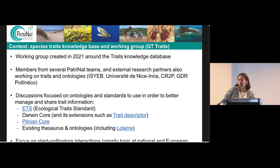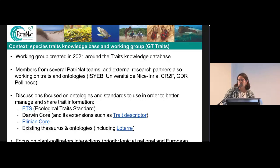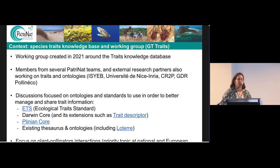Discussions were focused on ontologies and standards in order to better manage and share trait information. We looked at all existing standards and ontologies to see what was available and what was best fit for our needs. We looked at the ETS (Ecological Trait Standard), Darwin Core, because it had extensions such as trait descriptor, Plinian Core, and other existing thesauri and ontologies, including Lothaire, which is a French thesaurus focused on biodiversity terms. We decided to focus on plant-pollinator interaction.